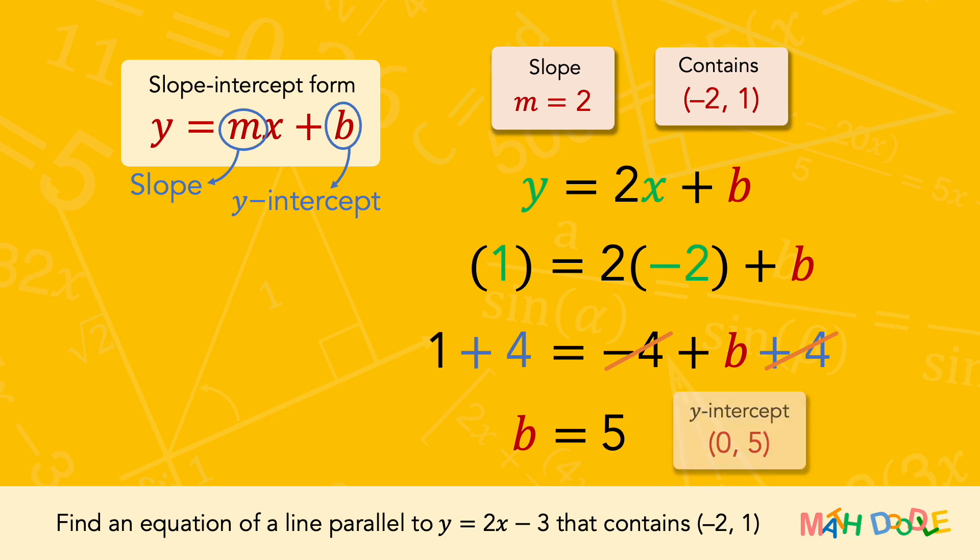Now, this tells us that the y-intercept is 5. Then, let's substitute 5 into the original equation.